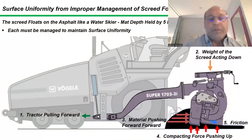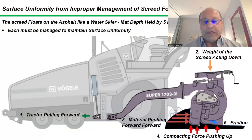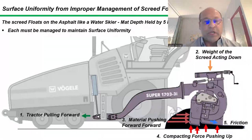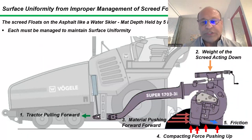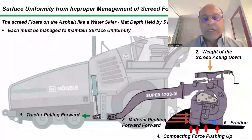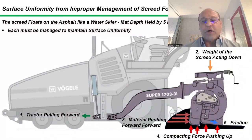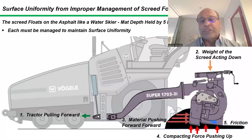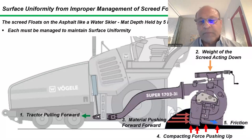Let's look at surface uniformity that could be created by the five forces that hold the screed to grade. We all know there are five forces that hold the screed to grade. This screed floats on the asphalt like a water skier. For today, in the 20 minutes that we have, we will only focus on how each one of these forces can create surface blemish.